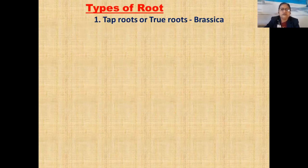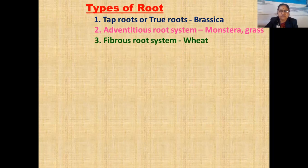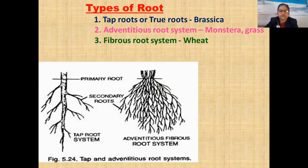Types of root. There are two main types of root. First: tap roots or true roots — example: Brassica. Second: adventitious root system — example: Monstera, grass. Third: fibrous root system — example: wheat. See the diagram of tap root and adventitious root system.